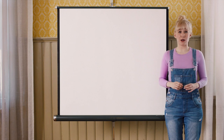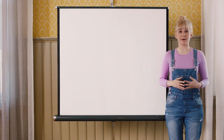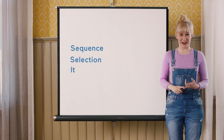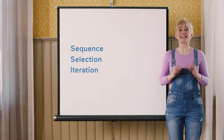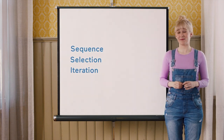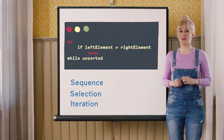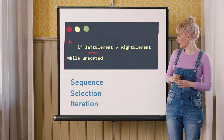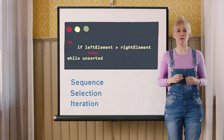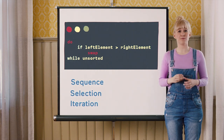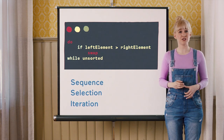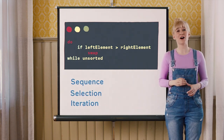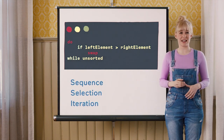Do you remember what we learned while talking about programming? About sequence, selection, and iteration. The exact same thing happened here. First, we put instructions one after the other. Then, we chose which part of the algorithm to execute based on a condition. And then, finally, repeated that part of the algorithm over and over again.